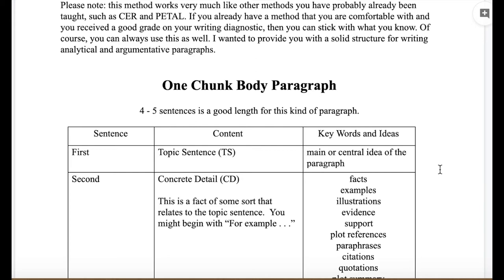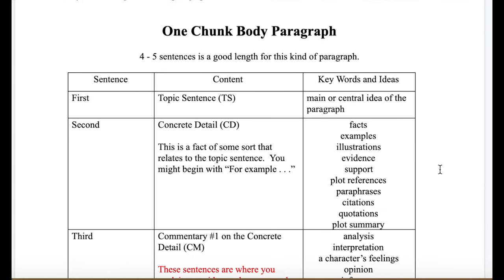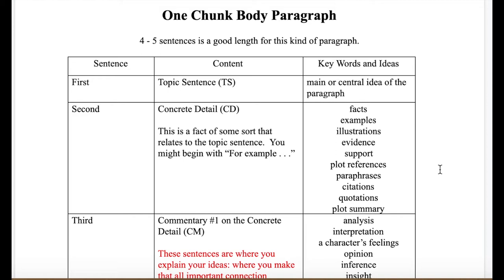This is in context of the theme paragraph you're going to be writing over a short story. This chart outlines the different sentences you will find in a body paragraph. The first sentence of any good body paragraph gives us the topic sentence — the main idea of the paragraph, what you're going to be talking about. The topic sentence should be written without the words 'I am going to talk about.'